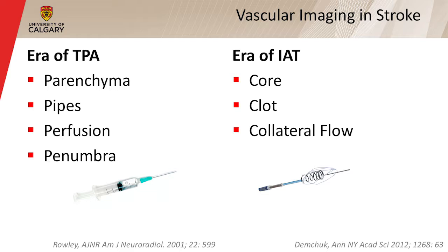I want to talk about concepts or strategies. In the era of TPA, we used to think about four things — the four Ps, defined by Howard Rowley from the University of Wisconsin in a 2001 AJNR editorial. These are: Parenchyma (the tissue), Pipes (the blood vessels), Perfusion (the amount of blood getting to the tissue), and Penumbra, which I'll define later. We tried to understand the roles of MR imaging in those four areas.